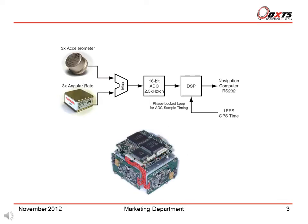Now let's look at the RT inertial measurement unit. In the inertial measurement unit, the accelerometers and angular rate sensors have signal conditioning applied. The outputs are sampled by a 16-bit ADC at 2.5 kHz per channel. The DSP performs further processing of the data, including coning and sculling motion compensation. The DSP also integrates the outputs, giving change in angle and change in velocity outputs rather than acceleration and angular rates. The timing of the ADC is controlled by the DSP.